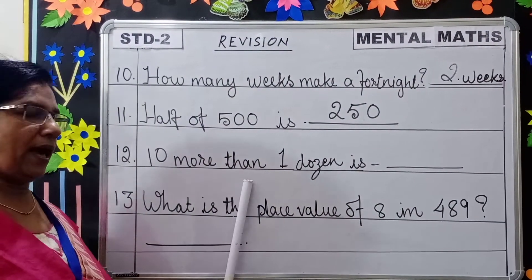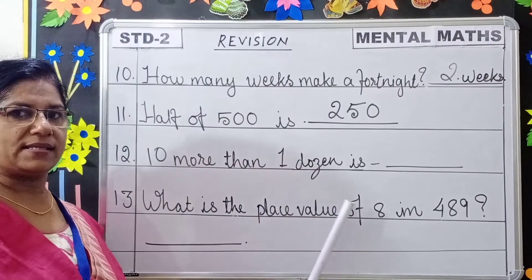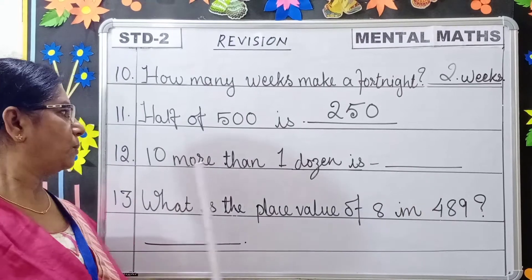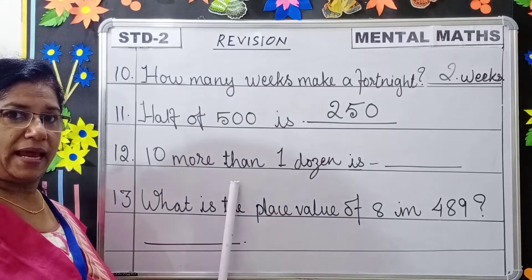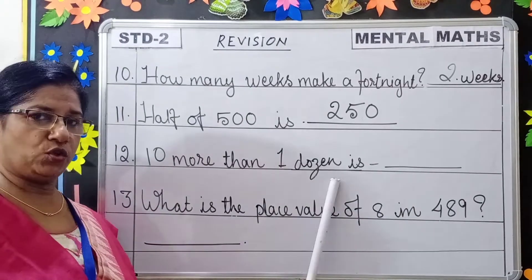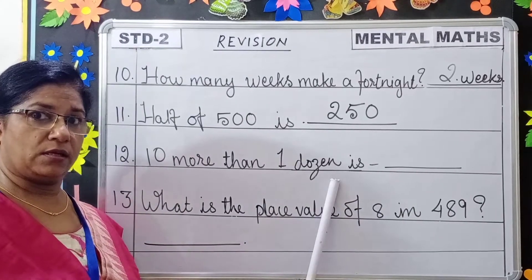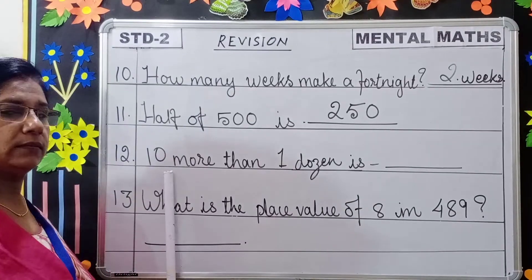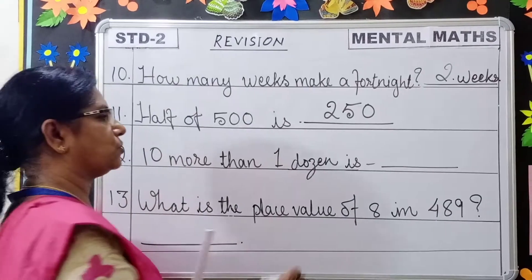10 more than 1 dozen is dash. More than means addition. 1 dozen is what unit? 12. 12 plus 10? 22.